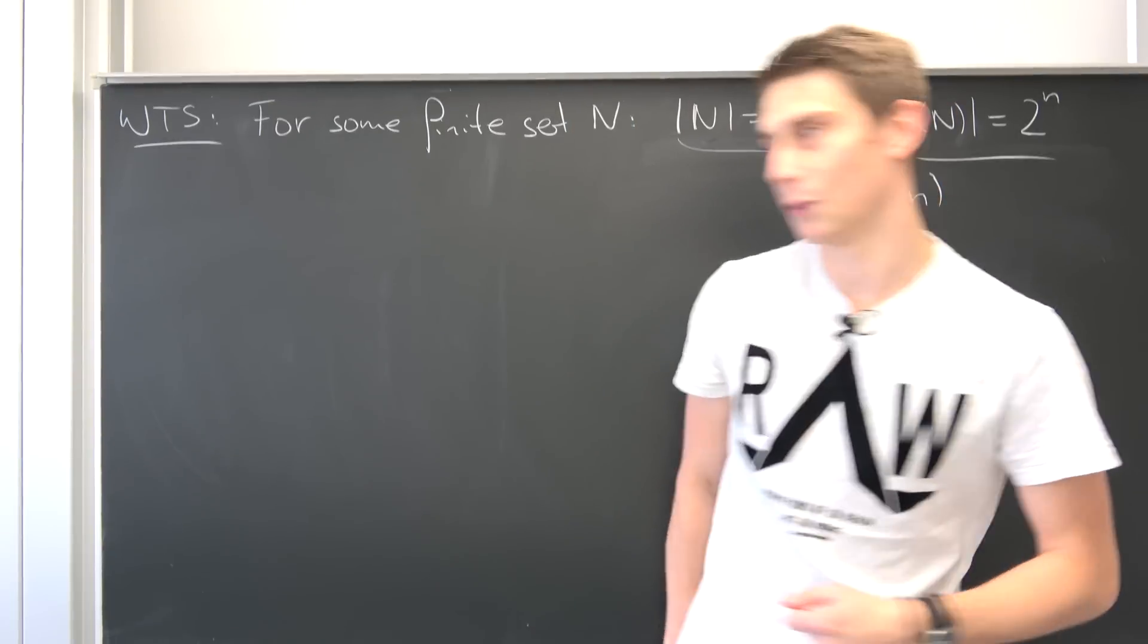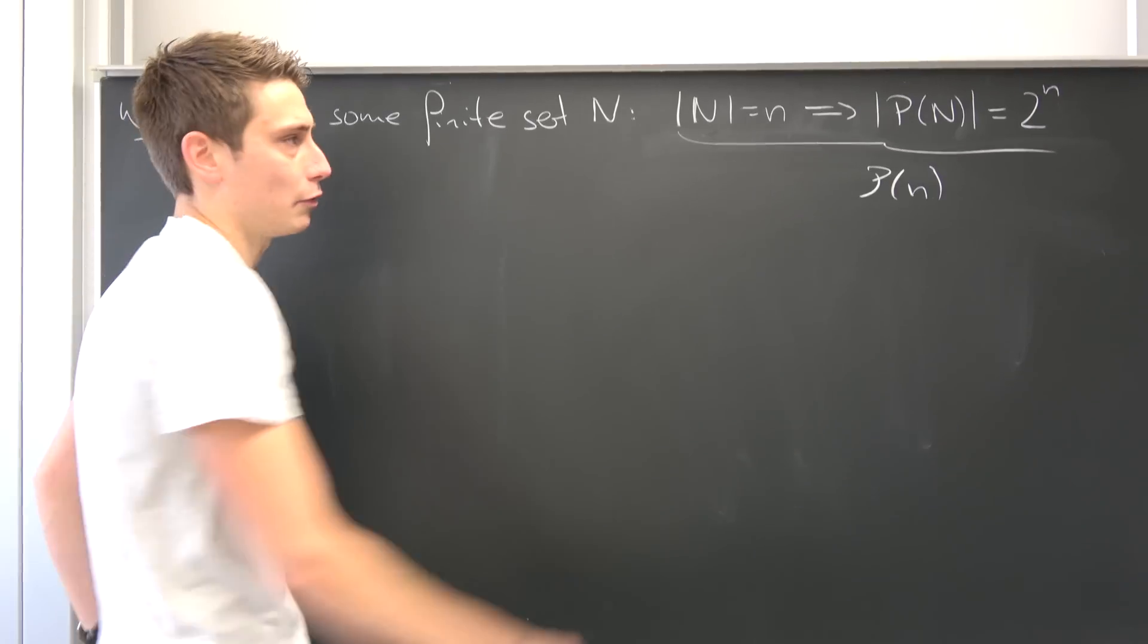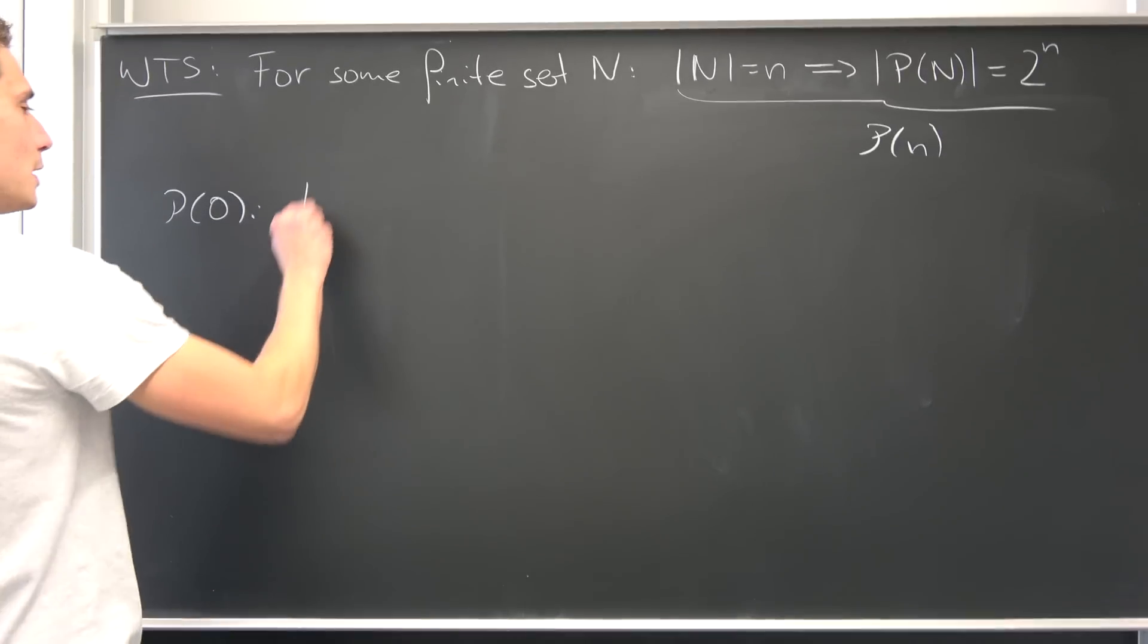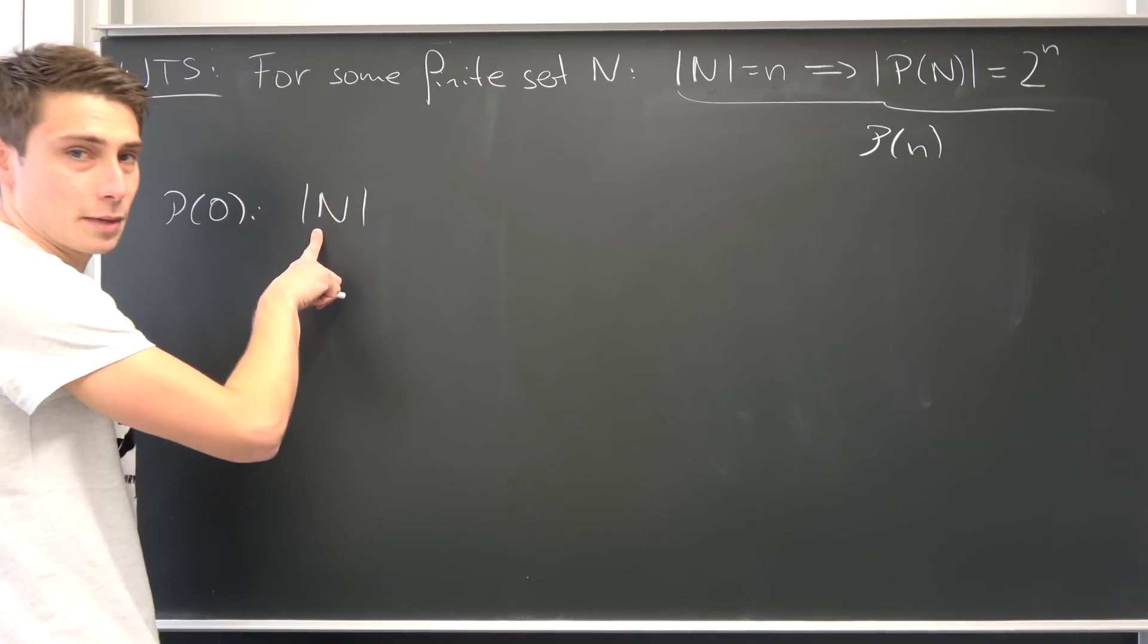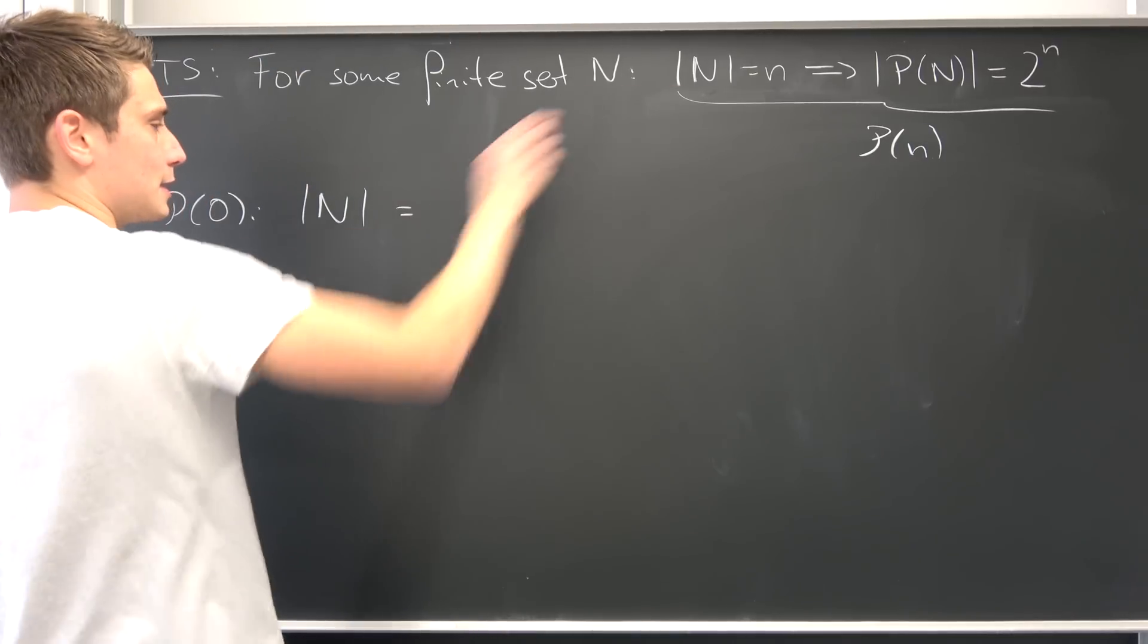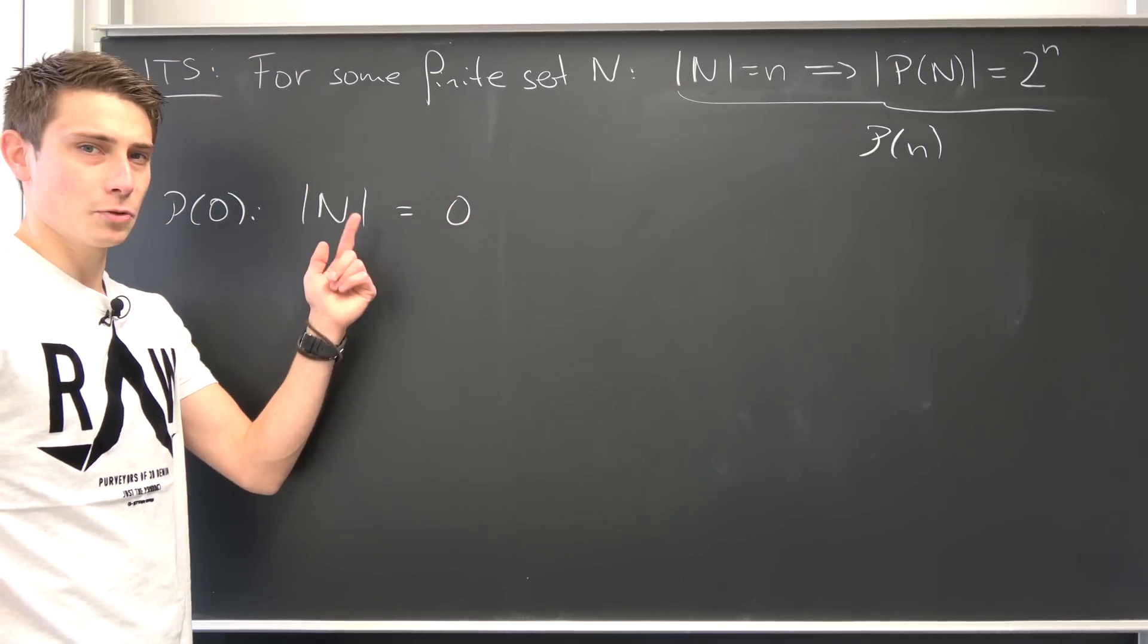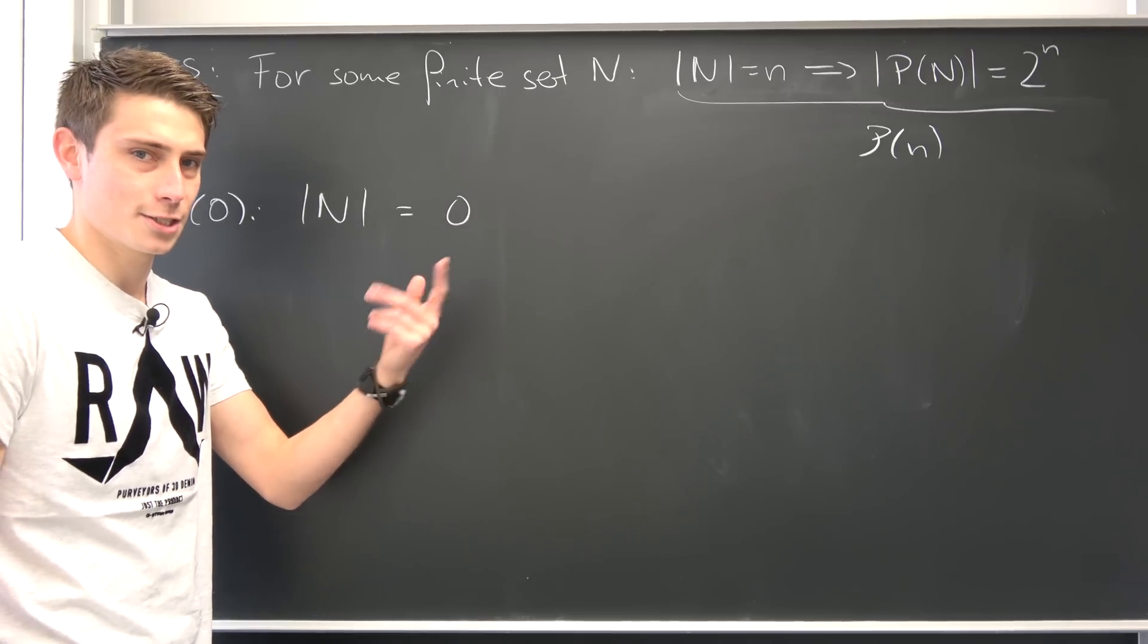So the proposition P of zero, what's it going to be? Well at first we are going to plug zero into here. Okay, so cardinality of N, the number of elements in the set is also called the cardinality. It's nothing but zero in this case. But what does that mean if we don't have any elements in the set? Well, that's just the empty set.